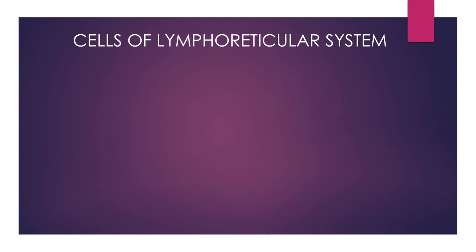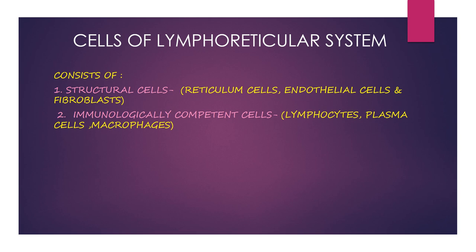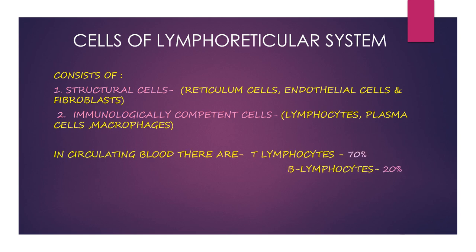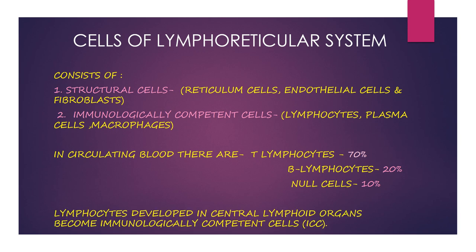The cells of the lymphoreticular system consist of two types: structural cells and immunologically competent cells. Structural cells include reticulum cells, endothelial cells, and fibroblasts. Immunologically competent cells include lymphocytes and macrophages. In circulating blood, T lymphocytes are about 70%, B lymphocytes about 20%, and null cells about 10%. Lymphocytes develop in central lymphoid organs and become immunologically competent cells.